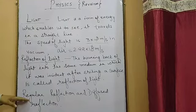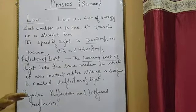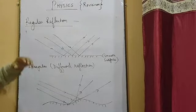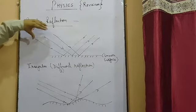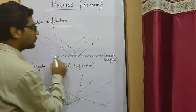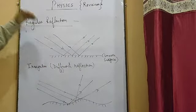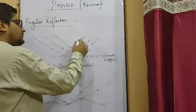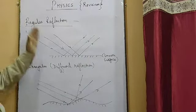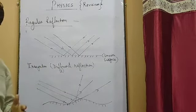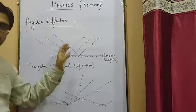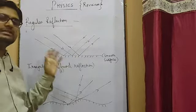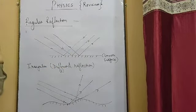Reflection of light can be of two types: regular reflection and diffused reflection, that is irregular reflection. In regular reflection, parallel rays of light are incident on a smooth polished surface, and after striking they bounce back with the reflected rays also parallel to each other. Like on a mirror — if parallel rays are incident on a smooth surface, they reflect back at the same angle, all returning parallel to each other. This is known as regular reflection.